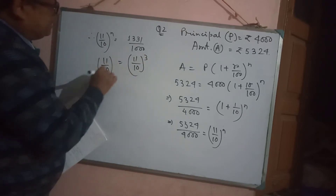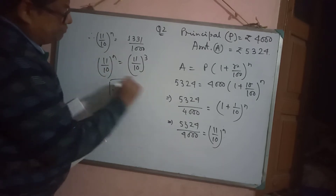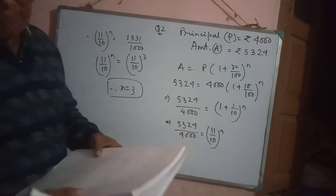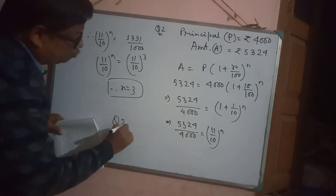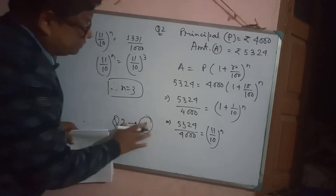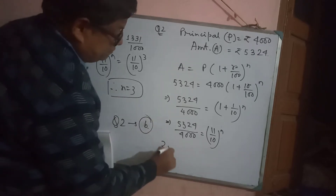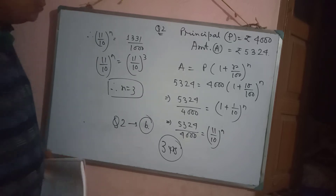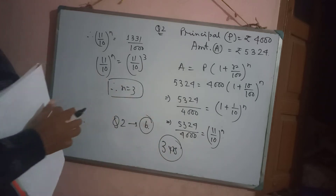Since (11/10)^N = (11/10)^3, we get N = 3. So the time is 3 years. Question number 2 answer is option B — 3 years. Option B is correct.